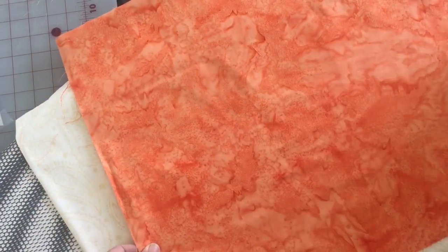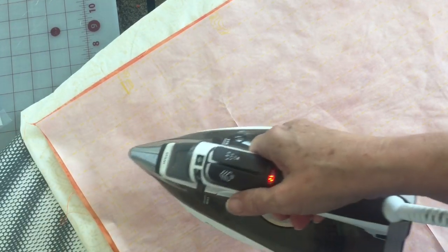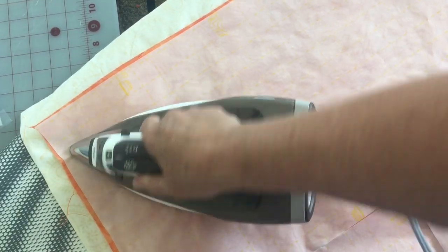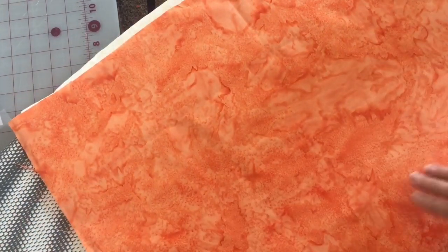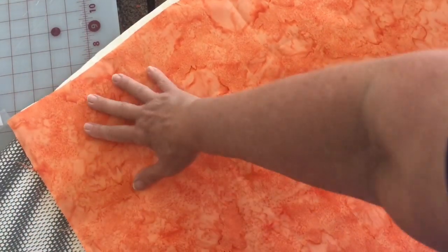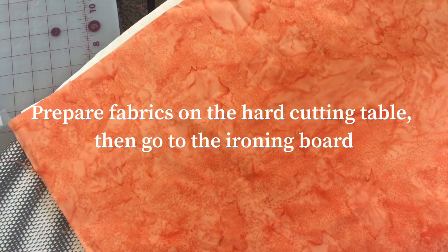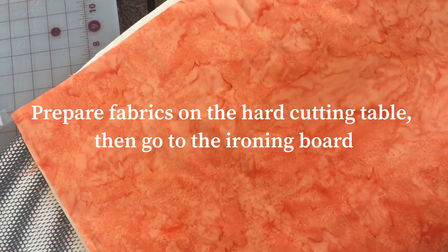I prepared all my fabrics on my cutting table on a hard surface before I come over here to the iron. Because the iron is soft, you can press in a fold or a wrinkle. But on a hard surface, as you're laying everything out, it's nice. You can get a nice adhesion of the fusible to the fabric on a harder surface like the cutting table than the soft iron.